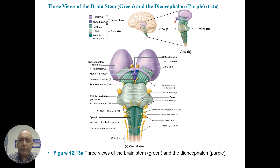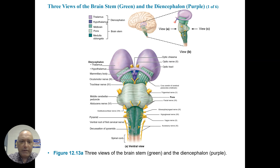Here are three views of the brainstem. The diencephalon is made up of the thalamus and the hypothalamus. The telencephalon is the cerebral cortex. The brainstem is made up of the midbrain, the pons, and the medulla. There are a number of cranial nerves coming off — they're just numbered. The first cranial nerve is olfactory, the optic nerve is two, oculomotor is three. We'll go over these subsequently.